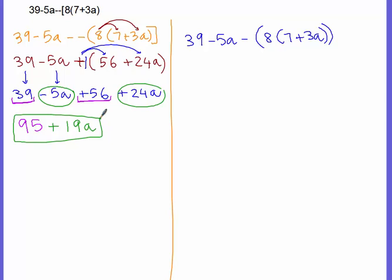Okay, on the right side of this, we have 39 minus 5a minus 8 times 7 plus 3a. So, again, we're going to carry this down here to the bottom.